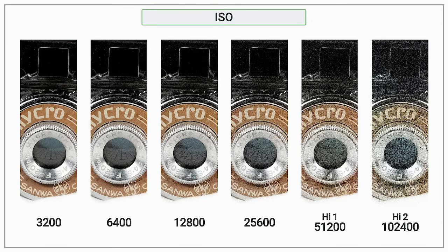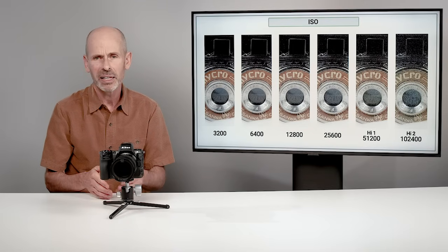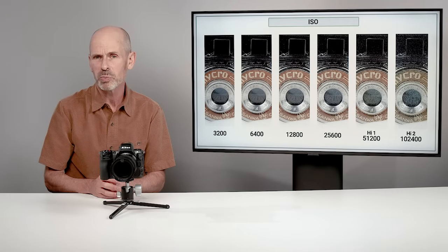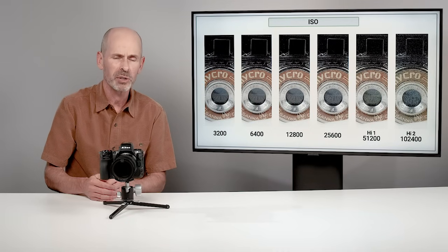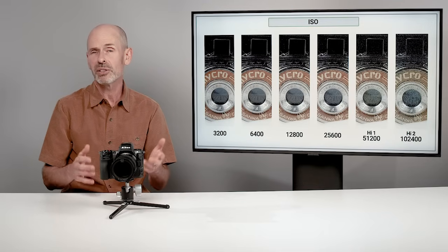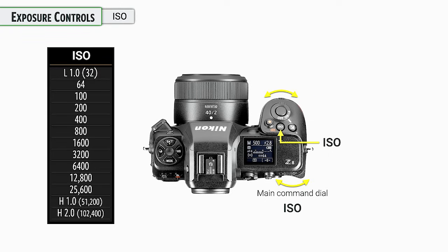Things start getting rough at the high ISO settings — 'High 1' and 'High 2.' I consider ISO 6400 and below to still look pretty clean. The highest numbered setting is 25,600; High 1 and High 2 are double and quadruple that. At those settings, the camera appears to be using software to brighten the image, with a notable drop in quality. As always, keep the lowest ISO possible while keeping your other settings where you want them.